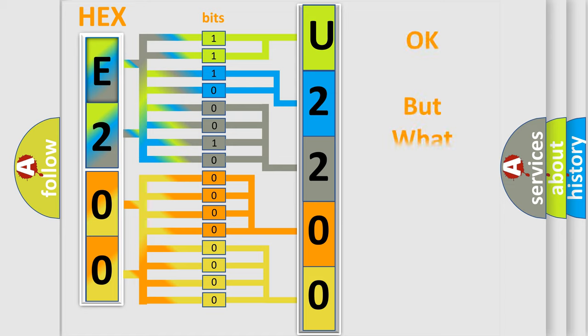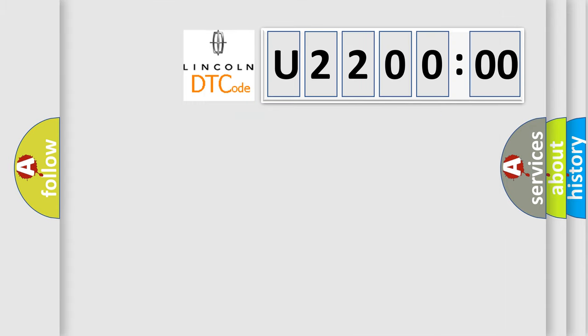The number itself does not make sense to us if we cannot assign information about it to what it actually expresses. So, what does the diagnostic trouble code, U22000, interpret specifically for Lincoln car manufacturers?